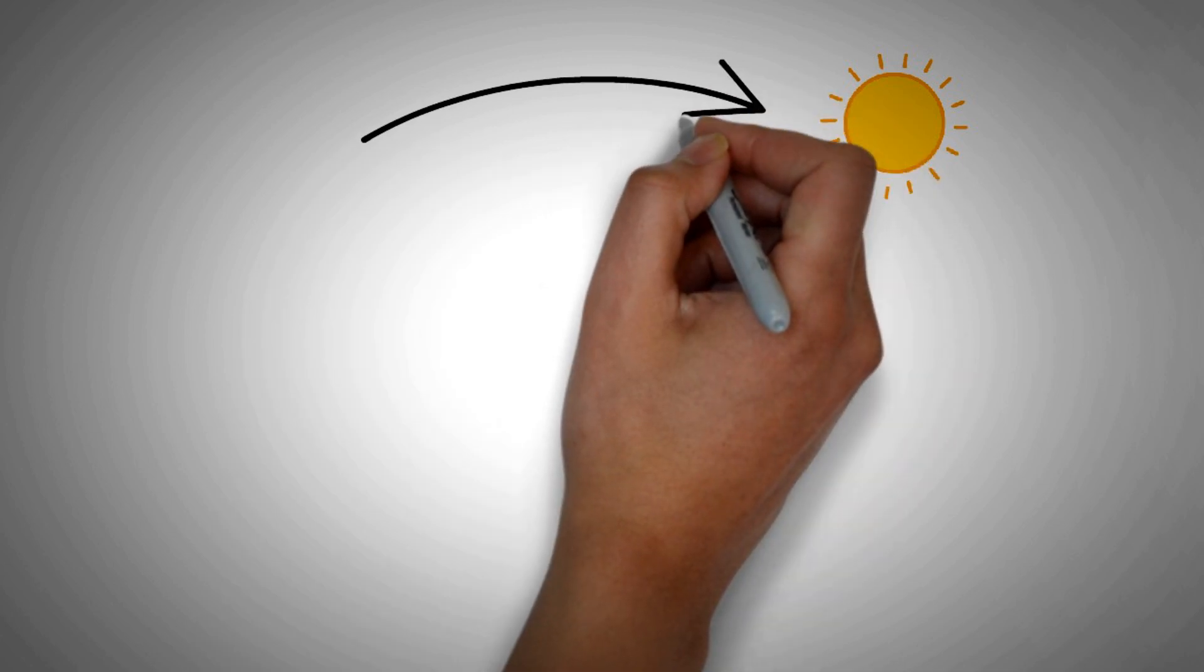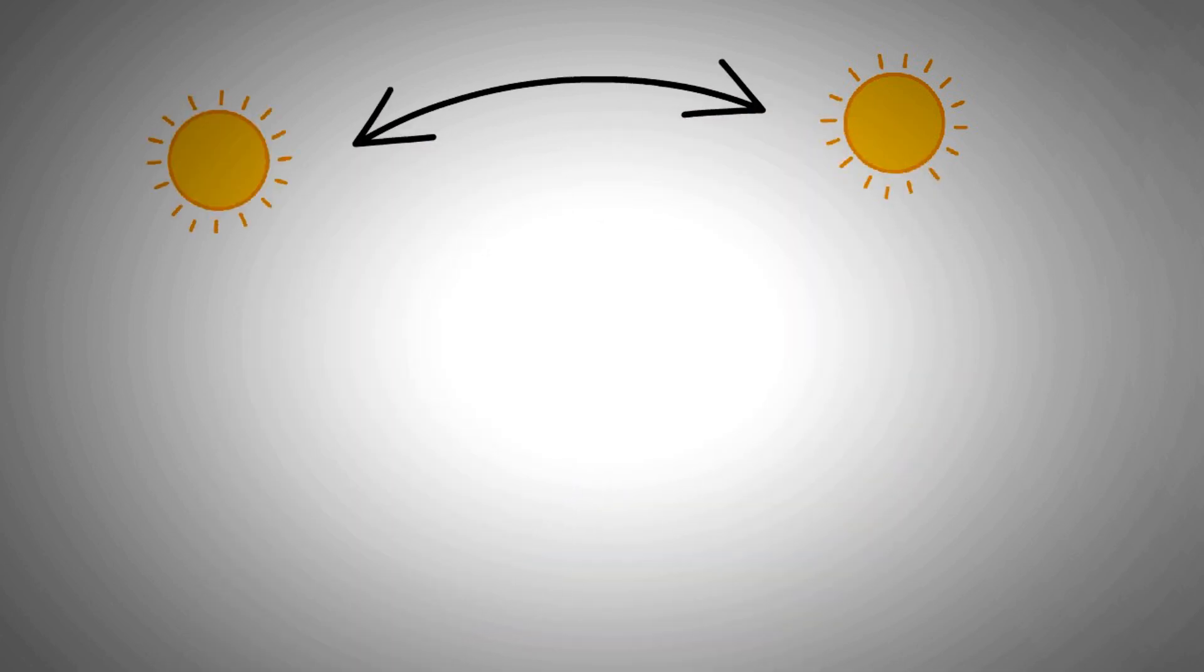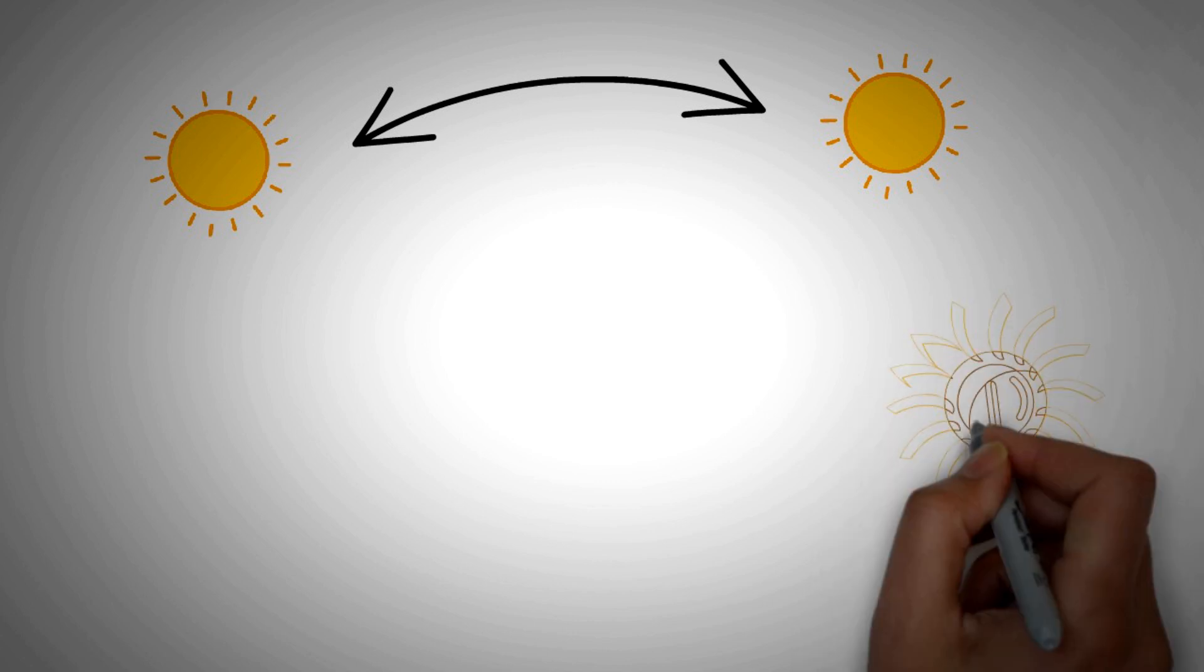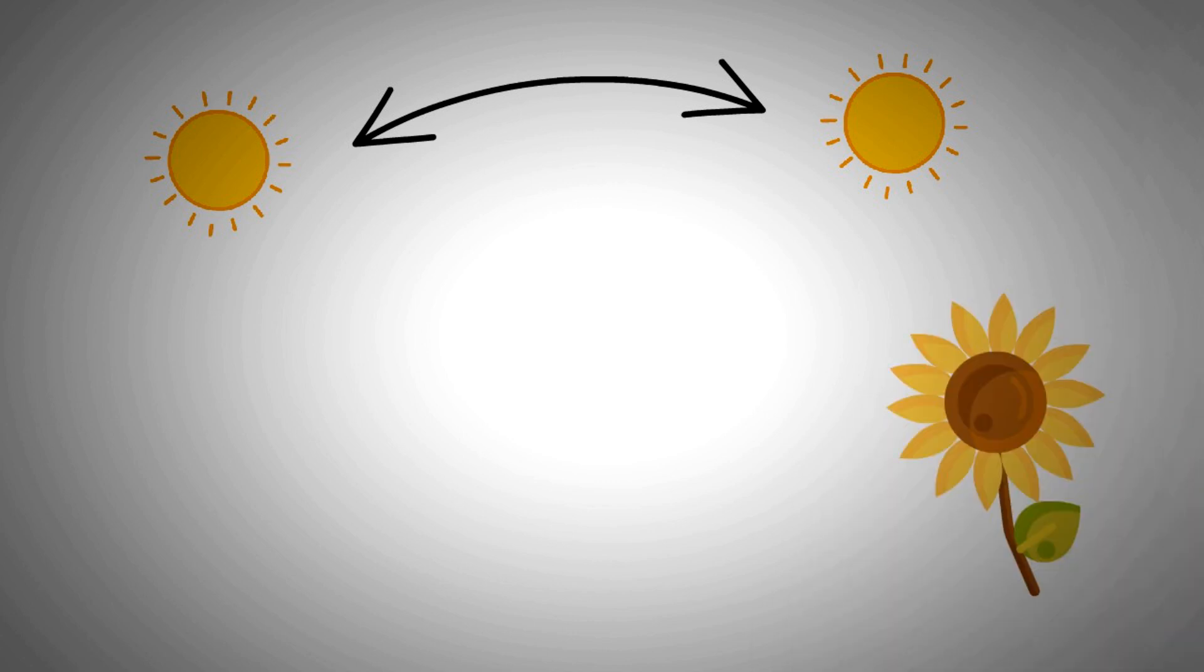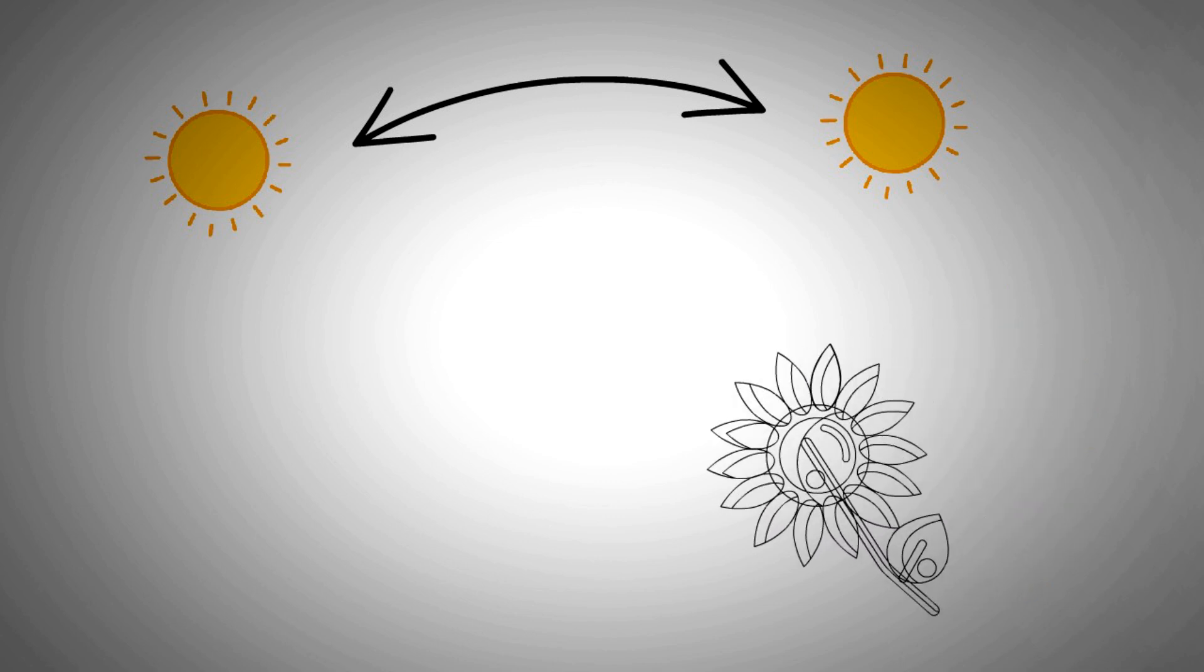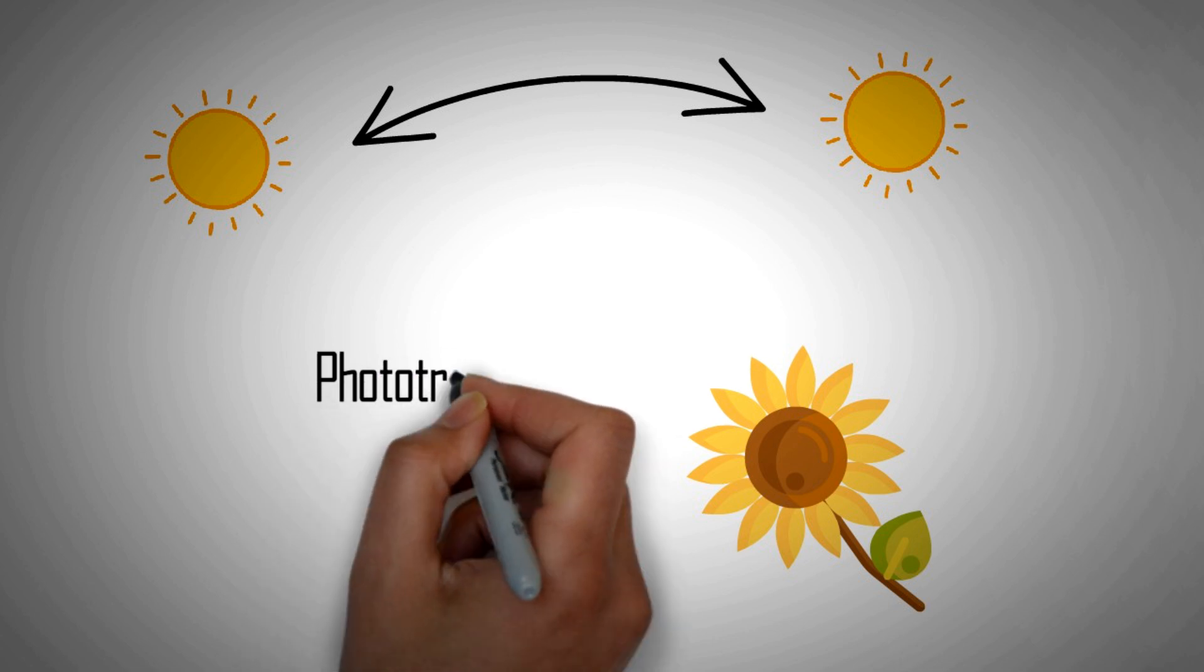From the dawn of civilization mankind has marveled at sunflower's ability to track the Sun. Apart from sunflowers there are also other living organisms that track the Sun and halt their movement when they're finally facing the Sun. The phenomena is called phototropism.